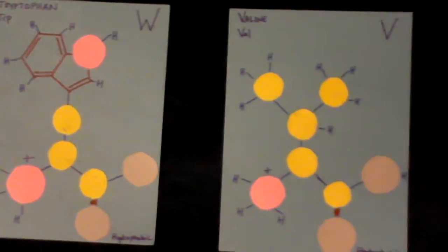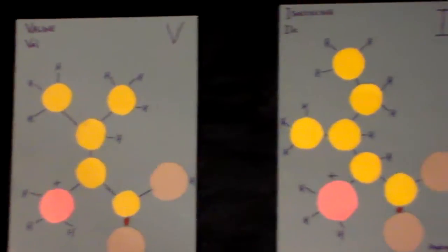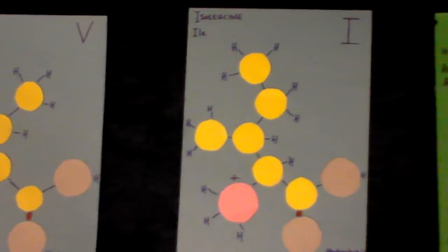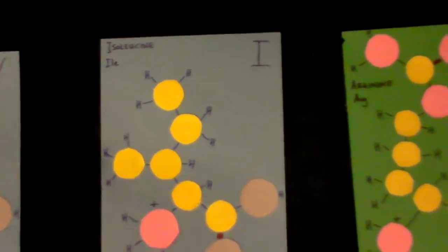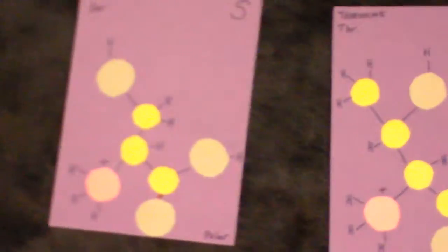Amino acids are life's building blocks. They're essential for biological processes. The 20 of them combine as proteins through the linkage of carbonyls and amines. The symmetry of the alpha carbon makes them chiral, forming an alpha helix spiral.